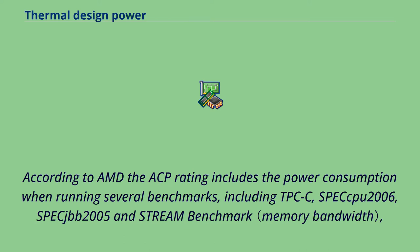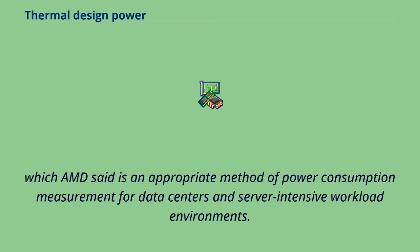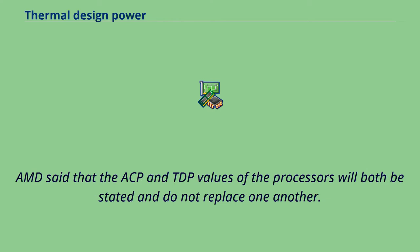According to AMD, the ACP rating includes the power consumption when running several benchmarks, including TPCC, SPECPU 2006, SPECT 2005, and Stream Benchmark, which AMD said is an appropriate method of power consumption measurement for data centers and server-intensive workload environments. AMD said that the ACP and TDP values of the processors will both be stated and do not replace one another.